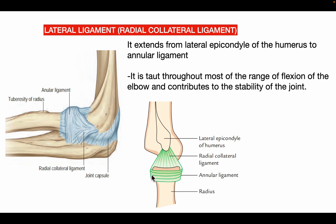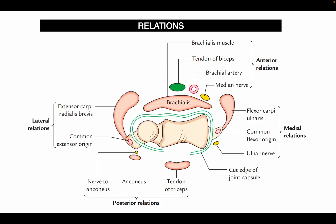The lateral ligament, also known as the radial collateral ligament, extends from the lateral epicondyle of the humerus to the annular ligament. It is taut throughout most of the range of flexion of the elbow and contributes to maintaining the stability of the elbow joint.